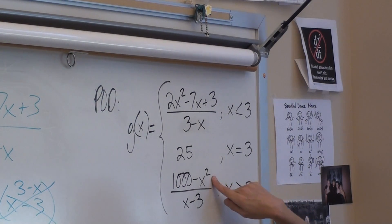And you plug it in, and on top it's 1,000 minus around 9, it's totally positive. And on the bottom, 3.1 minus 3 is positive. So you get a positive over a positive, so it's positive.